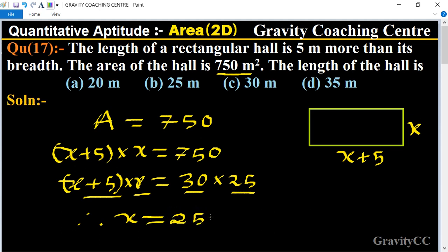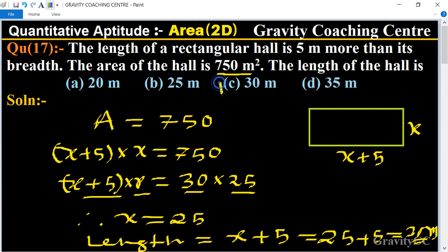which is the breadth. So the length is x plus 5 equals 25 plus 5 equals 30 meters, which is the required answer. Option C is the right answer.